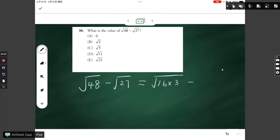Rewrite square root of 27 into square root of 9 times 3. And then we break each term of this into two square roots, so this is the square root of 16 times square root of 3 minus square root of 9 times square root of 3.